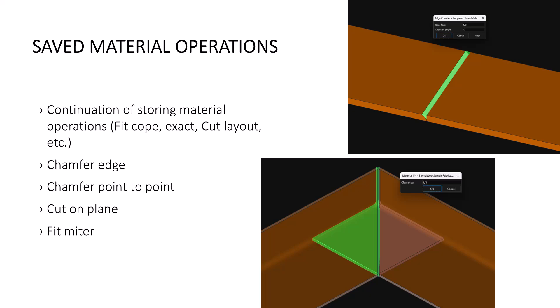Save material operations — you can see at the top of the slide on the left-hand side, we're just adding on to the ones we've already had. Like I mentioned, some of these have been in the software for a while: the fit cope, fit exact, cut layout, etc. We now have some new ones: chamfer edge, chamfer point to point, cut on plane, and fit miter. It's going to work just like the other saved material operations — you'll be able to go into the material edit and delete them without having to reset the entire material.